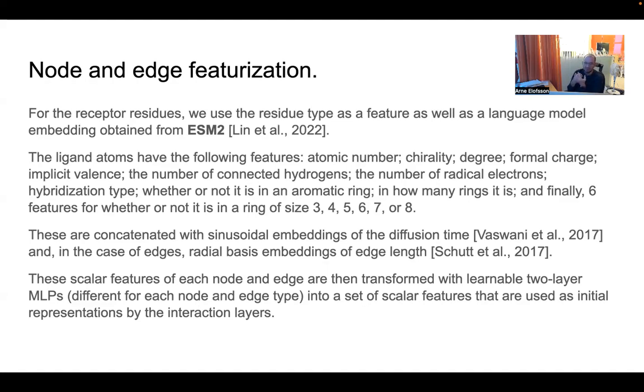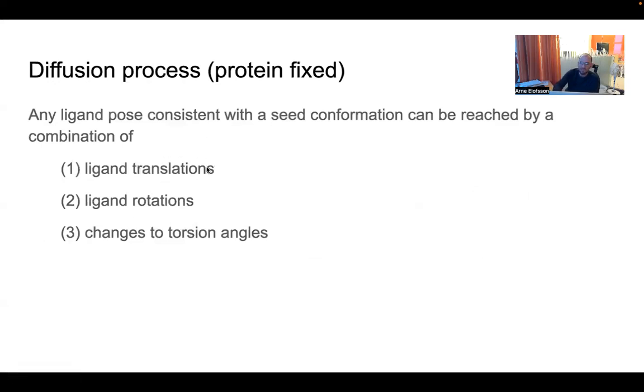A key thing here is that for the receptor residues, you do not embed it only with amino acid type, but also with the ESM encoding that I will talk about in another lecture. Otherwise, you basically describe the atoms with normal features like the atom type, the valency, the charge, etc. You can basically make a linear embedding and then you basically transform it using a learnable two-layer multi-layer perceptron. And you just train it as you train another diffusion model. So basically the feature is you can look at the ligand conformation by moving the ligand a bit, rotating it, or changing the torsional angle of the ligand.